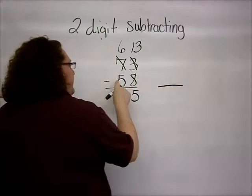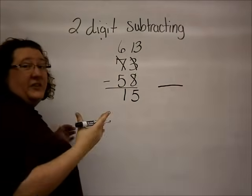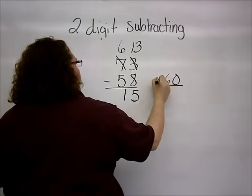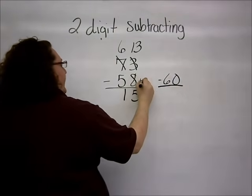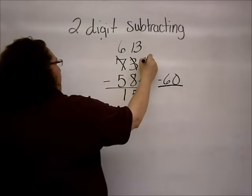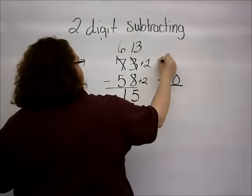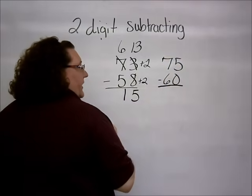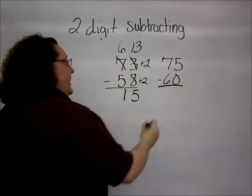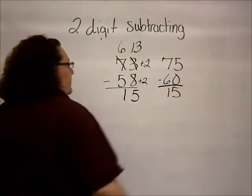Now, if I choose to do it in the mental math method, I have 58 down here at the bottom. 58 is almost 60. And to get there, I had to add 2. So, 73, my original number at the top, plus 2 would give me 75. Again, now I have a number that I do not have to borrow to subtract, and I end up with the same answer of 15.